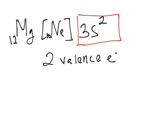If you had a 2p6 here, you would not count these electrons as valence electrons. It would still have two. A very easy way to find valence electrons is by using the periodic table.